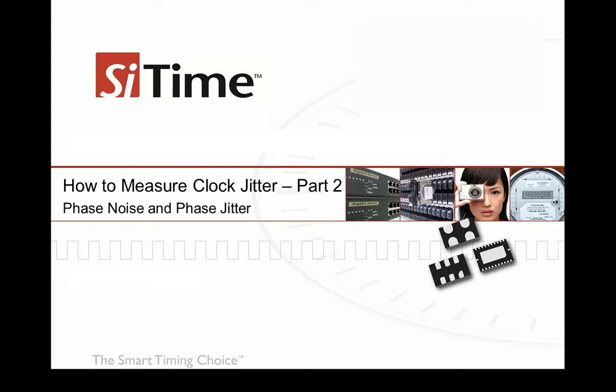In Part 1, you discussed period jitter. This week, you're going to focus on phase noise and time interval error, or TIE. Before you go into measurement details, can you define this type of jitter and specific applications that care about it?